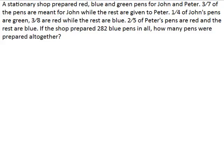A stationary shop prepared red, blue and green pens for John and Peter. Three-sevenths of the pens are meant for John while the rest are given to Peter. One-quarter of John's pens are green, three-eighths are red while the rest are blue. Two-fifths of Peter's pens are red and the rest are blue. If the shop prepared 282 blue pens in all, how many pens were prepared altogether?